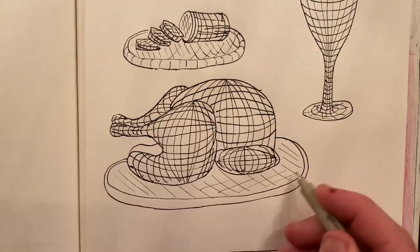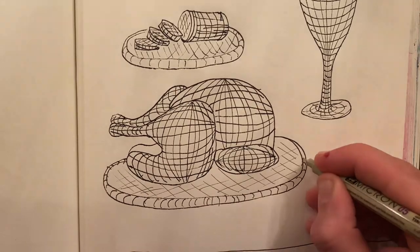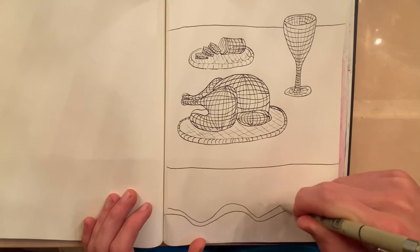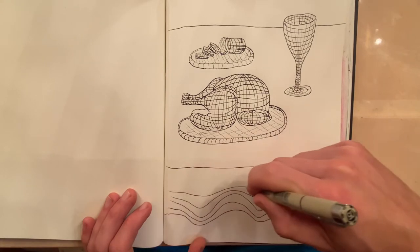A few straight hatch marks on the plate, some little curving ones on the rim, and all of our objects are done. The only cross contour work we have left to do is on the tablecloth itself.